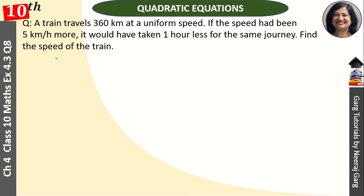So, we let the speed of train x km per hour. See, when we're given 1 hour less, we will make the equation in time.